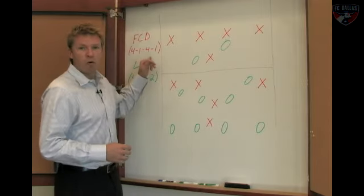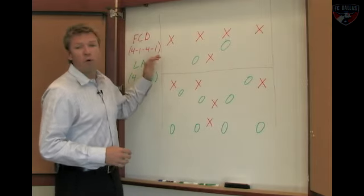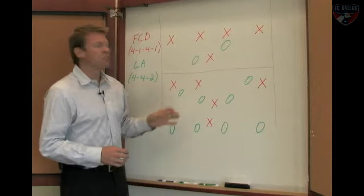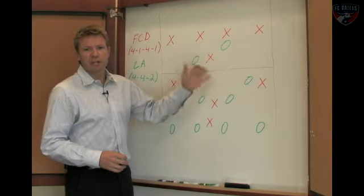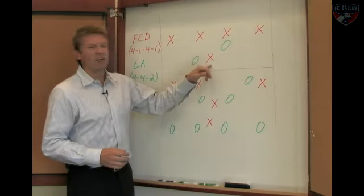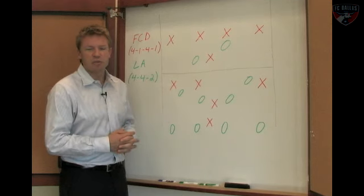First, we talked about FC Dallas' formation and that familiar 4-1-4-1. LA Galaxy in a 4-4-2, sometimes it did morph into a 4-5-1 with Mike McGee dropping back in the midfield a little bit. I think that was a little bit more to deal with Daniel Hernandez when FC Dallas was in possession.